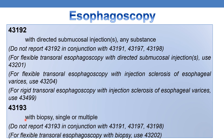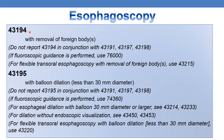CPT 43193 deals with esophagoscopy, rigid, transoral, with biopsy, single or multiple. CPT 43194 is reported when esophagoscopy rigid transoral is done with removal of foreign body. If done with balloon dilation less than 30 mm diameter, report 43195; if fluoroscopic guidance is performed, also use 74360. For esophageal dilation with balloon 30 mm diameter or larger, refer to 43214 and 43233. For dilation without endoscopic visualization, see 43450 and 43453.